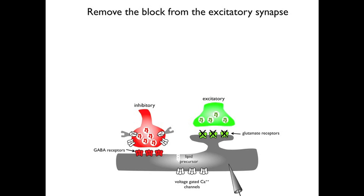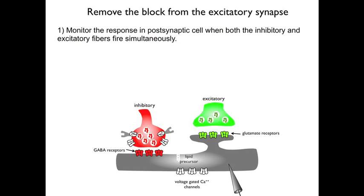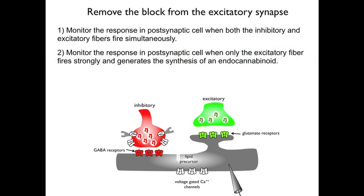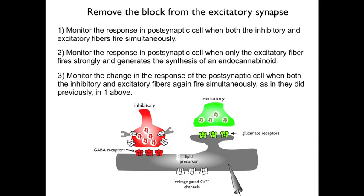In the next phase, we're going to remove the block from the excitatory synapse and make the excitatory synapse functional. We're then going to monitor the response in the postsynaptic cell when both the inhibitory and the excitatory fibers fire simultaneously. Then we're going to monitor the response in the postsynaptic cell when only the excitatory fiber fires strongly and generates the synthesis of an endocannabinoid. And finally, we're going to monitor the change in the response of the postsynaptic cell when both the inhibitory and excitatory fibers again fire simultaneously.